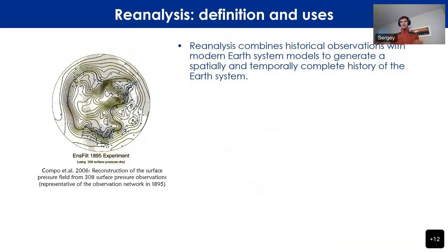A couple of slides introduce the audience to the practice of reanalysis. Reanalysis combines observations with modern Earth system models to generate a spatially and temporally complete history of the Earth system. Here's an example from a Gil-Compost paper where sparse observations of surface pressure over the United States, Atlantic, and Europe are used to reconstruct the surface pressure flow field over the northern hemisphere. Over the Pacific where observations are sparse, fewer details can be reconstructed.